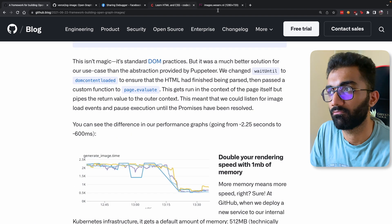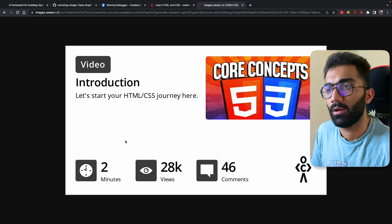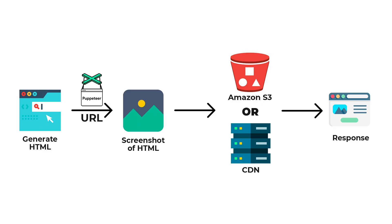So that's the full process: first, generate the HTML structure of what you think should be a good og image and populate it dynamically through query parameters; then take a screenshot; then either upload it to S3 or serve it via a CDN with an expiry. That's the complete workflow.